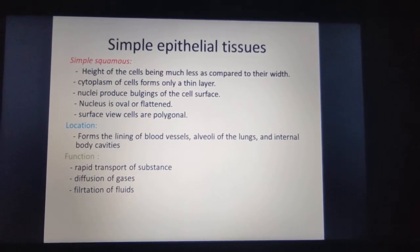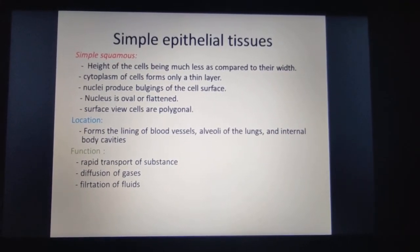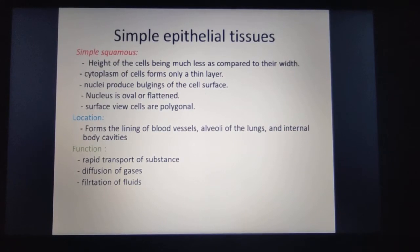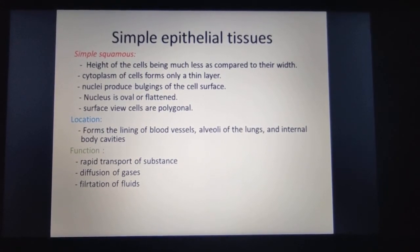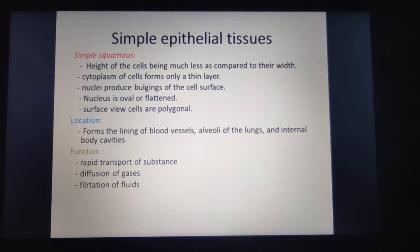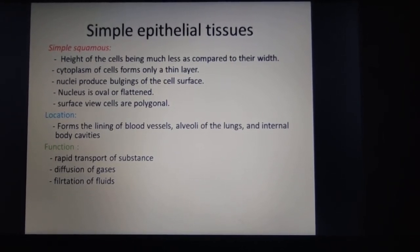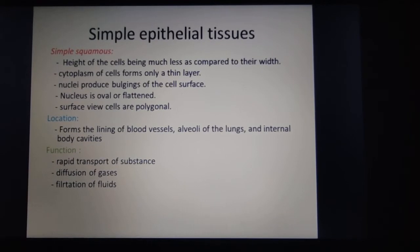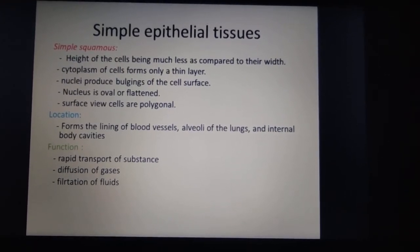Simple squamous epithelium: the height of the cells is much less compared to the width. The cytoplasm forms only a thin layer, and the nucleus is oval or flattened, producing a slight bulge at the cell surface. It is located in the lining of blood vessels, alveoli of the lungs, and internal body cavities. Its functions include transport of substances, gas diffusion, and filtration of fluid.